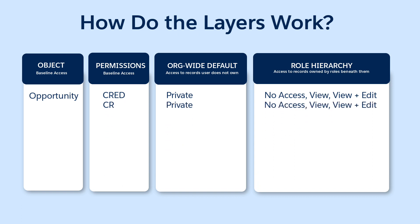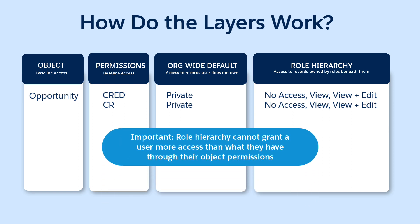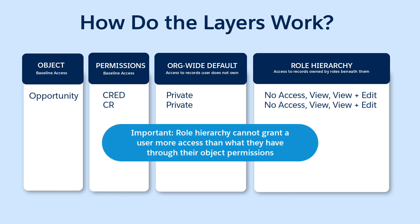If we change Alan's object permissions to have only Create and Read, and the org-wide defaults are private, the role hierarchy offers us the same options. However, even if we choose View plus Edit, Alan is unable to edit opportunities, since he doesn't have that permission. The role hierarchy cannot grant a user more access than they have through their object permissions.